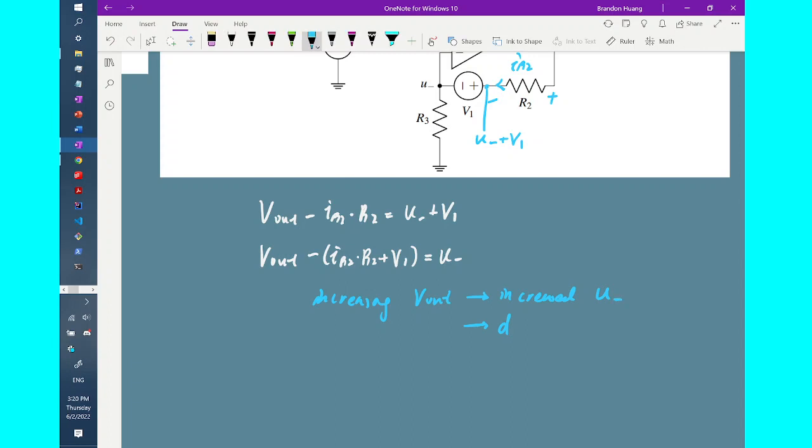And that's because by increasing one side of the equation, I must increase the other side of the equation. So in this case, i_R2 times R2 plus V_1 is a constant value. And to maintain the equation, while I increase the value of V_out, to maintain this equation such that both sides are equal to each other, I must also increase U_-.